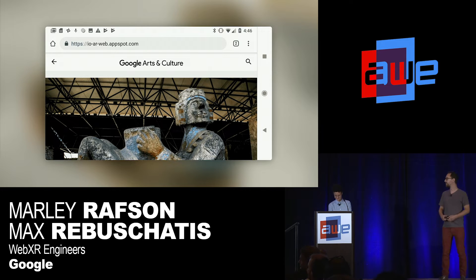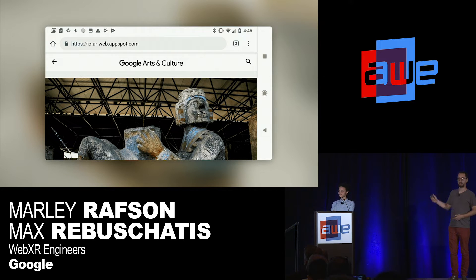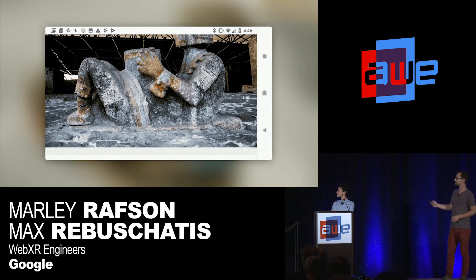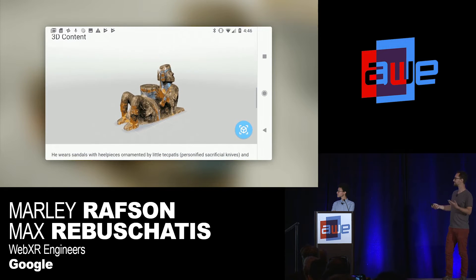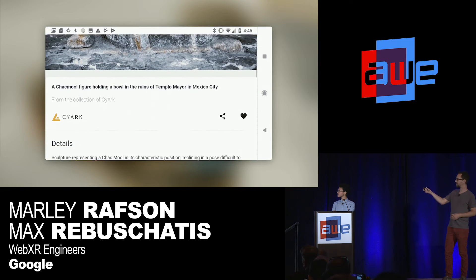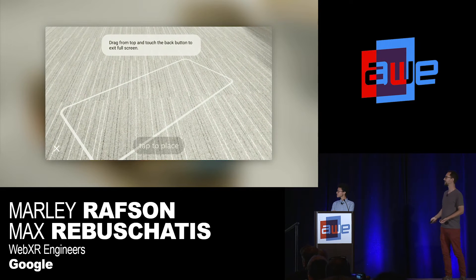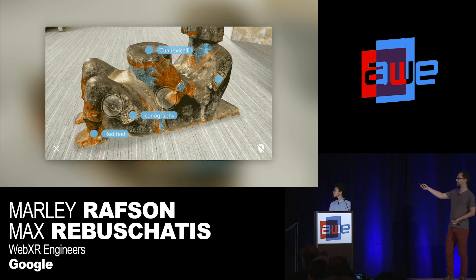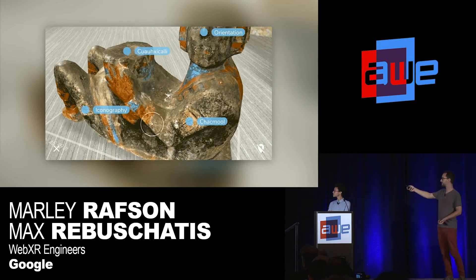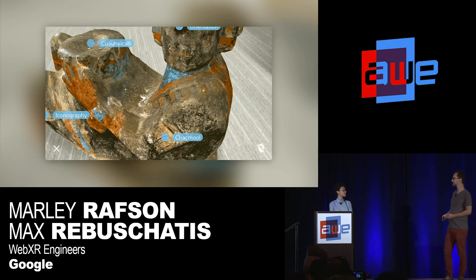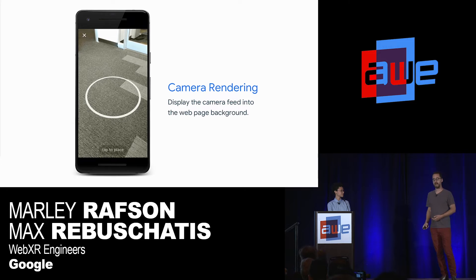Once we did that, we rebuilt our example in Chrome proper — this is actually running in Chrome. This is a Google Arts and Culture prototype website, similar to the article Marley showed earlier. We took a scan of an object from the Google Cultural Institute and made a sample web page. There's a button in the web page that lets you pop into AR mode, and you get a seamless transition directly into augmented reality still within the web. You can place the object. These callouts are all just WebGL. You can click on them and get content done just with HTML and CSS. All of this technology was built with standard web technologies.